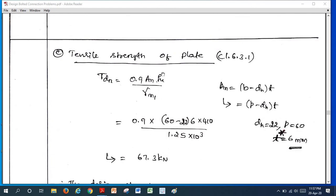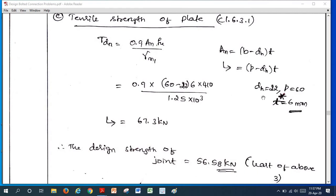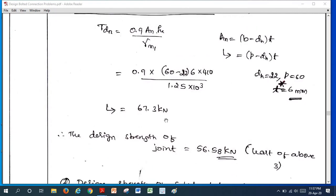Tensile or tearing strength of the plate according to 6.3.1. Here is the formula. A in is B minus NDH into t. N here is only one, per pitch only one bolt falls. B becomes pitch, 60 millimeter. I have substituted 1 into diameter of the bolt hole 22. T we should take thickness of the main plate 6 mm. Therefore, we get 67.3 kN.